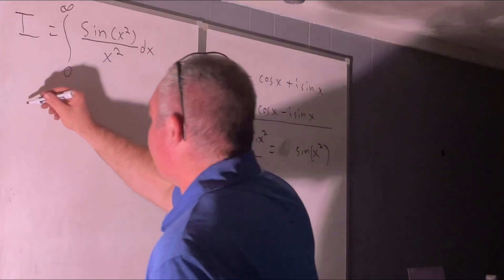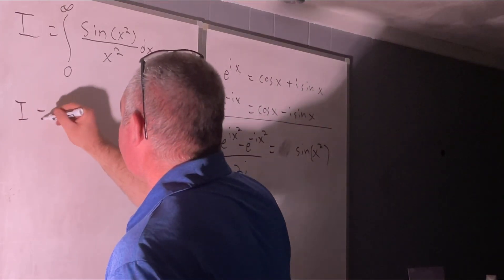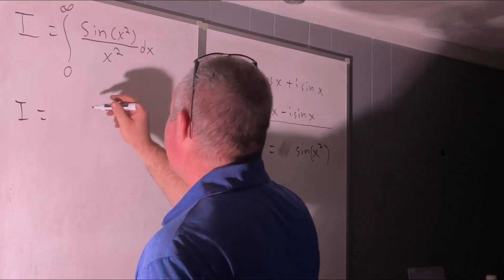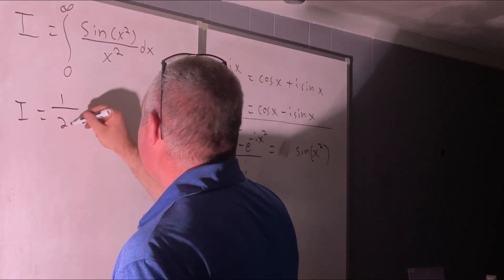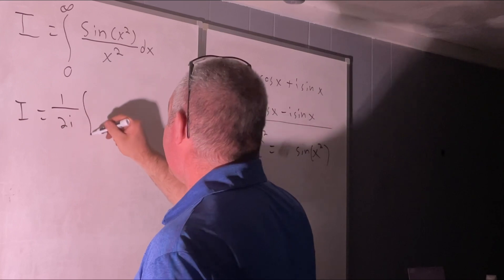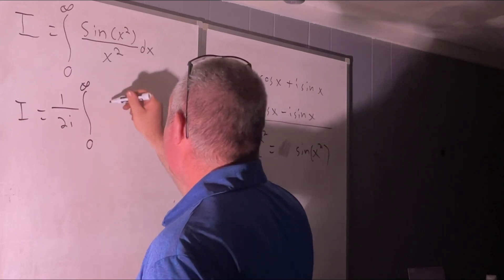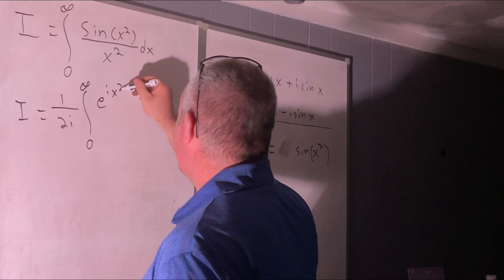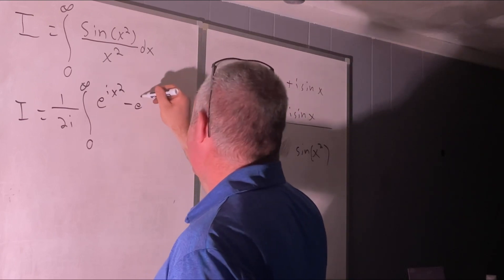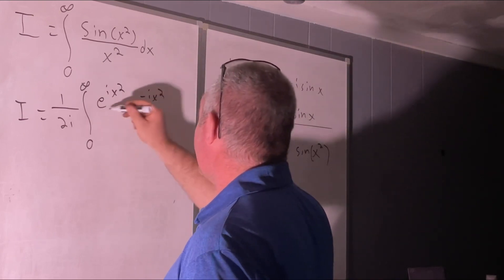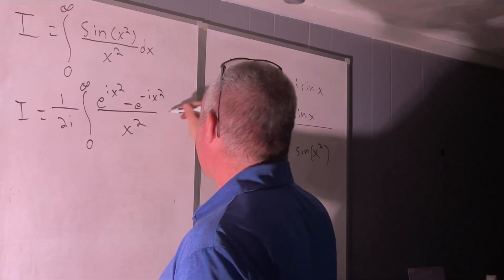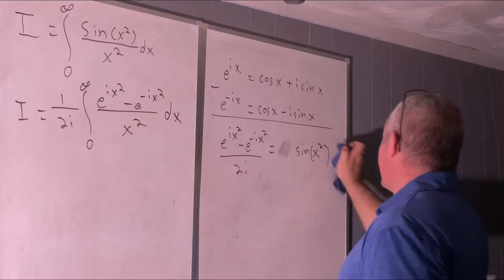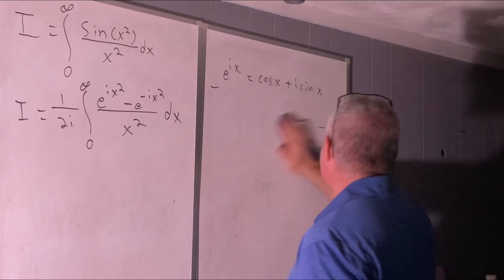So we'll rewrite our integral like this: it's going to be 1 over 2i times the integral from 0 to infinity of e to the ix squared minus e to the negative ix squared, all over x squared, dx.